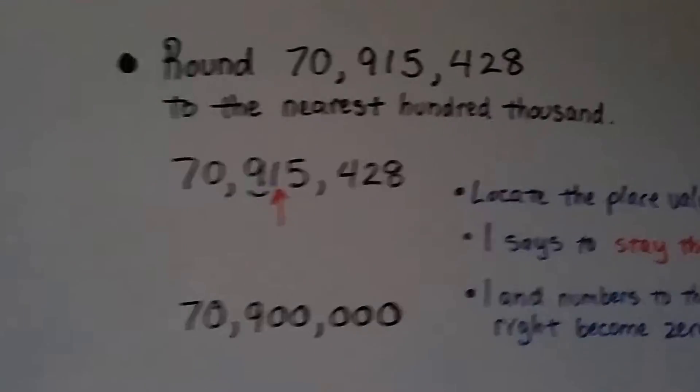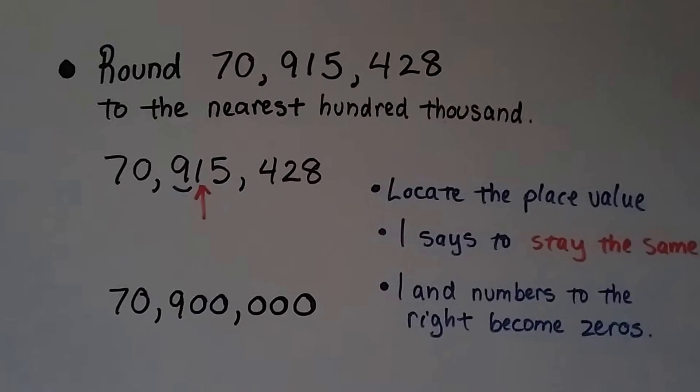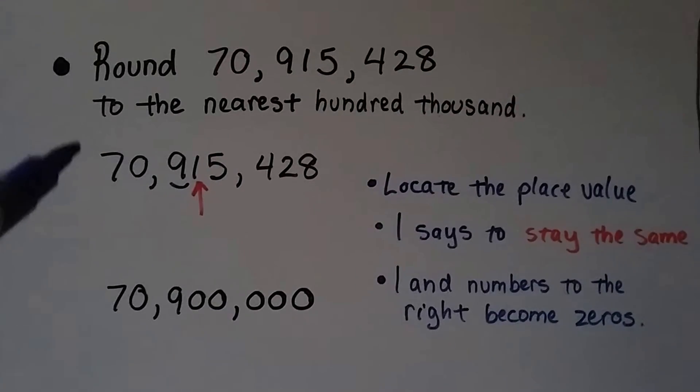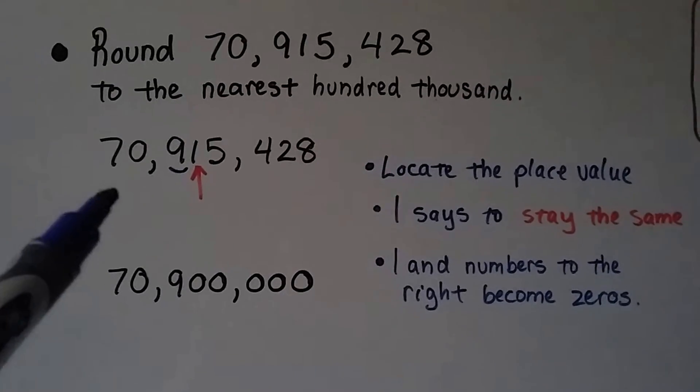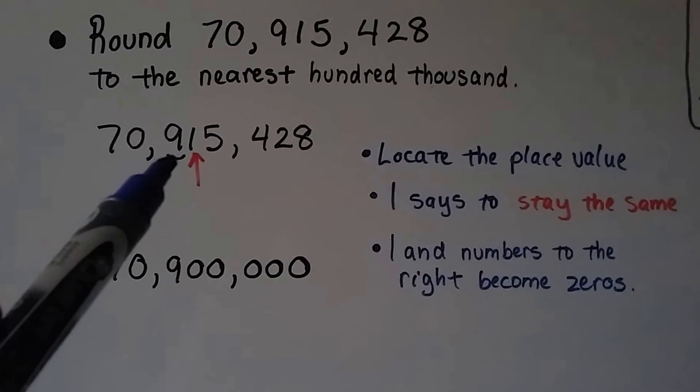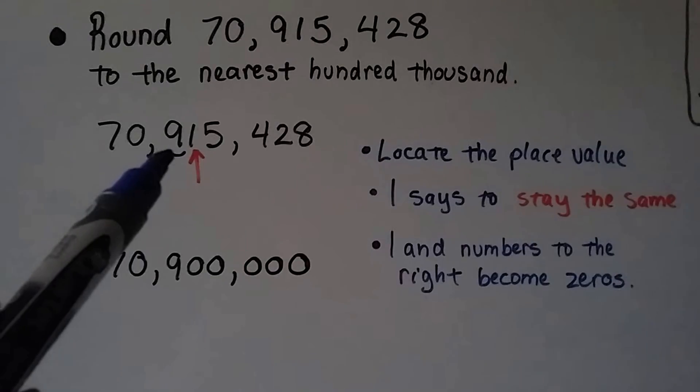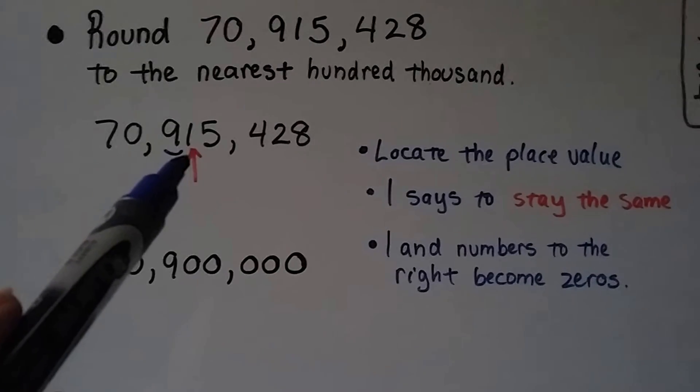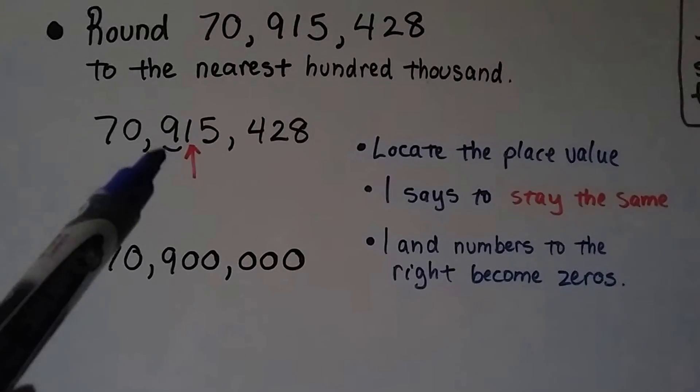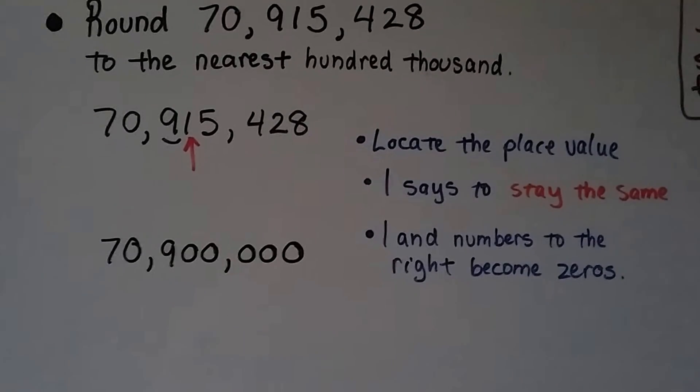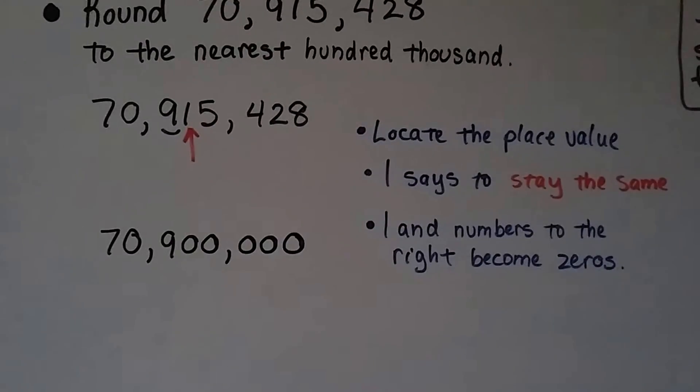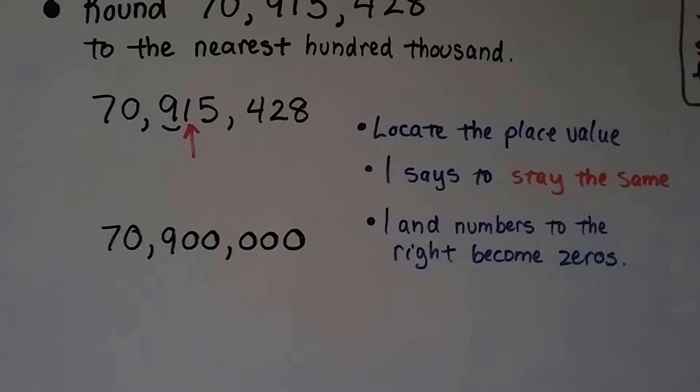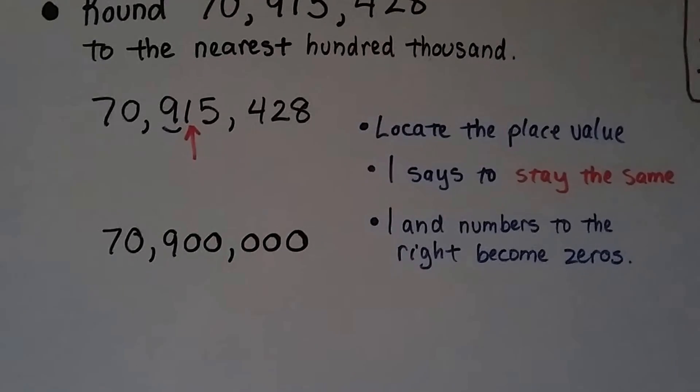Try another one. We've got the exact same number, 70,915,428. And we need to round to the nearest 100,000. We locate that place value. That's the 9. That's the 100,000. And we look to the digit to the right. It's a 1. It tells the 9 to stay the same. And the 1 then becomes a 0 with all the numbers to the right. So we have 70,900,000.